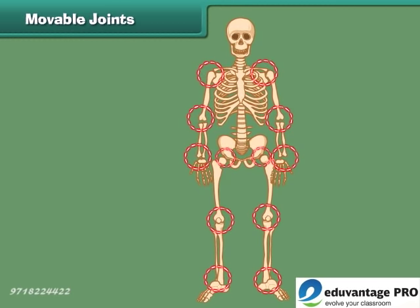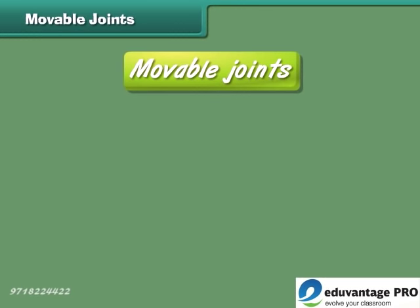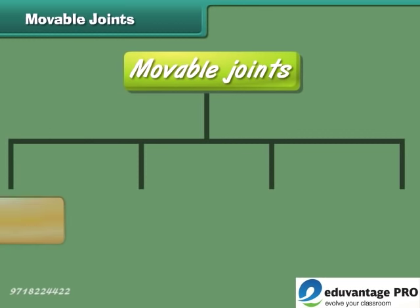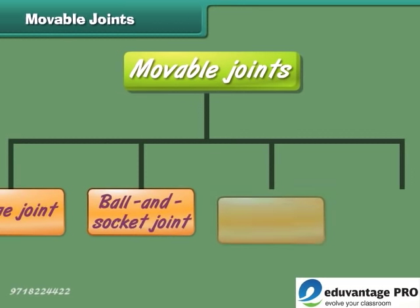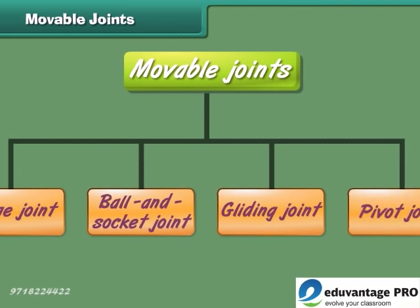Most movable joints allow free movement of the body parts, whereas in some joints only a little movement is possible. Moveable joints are grouped into four types on the basis of movement. Come, let us discuss each type in detail.